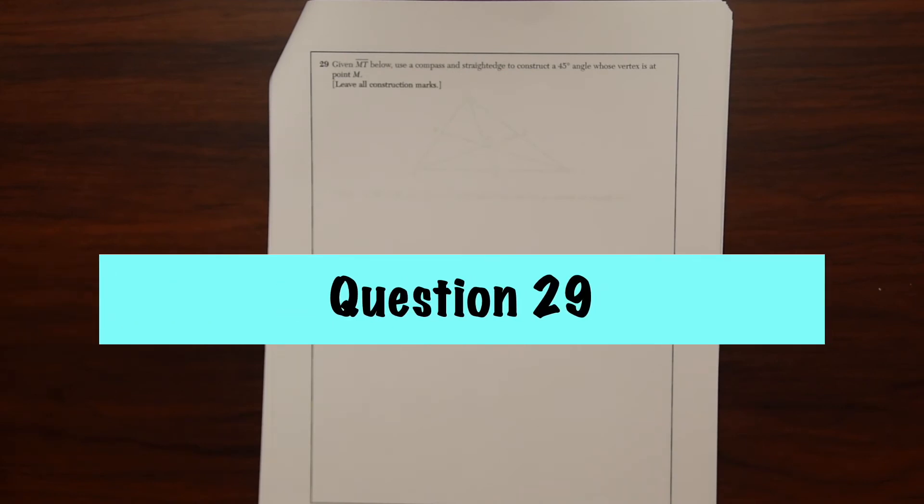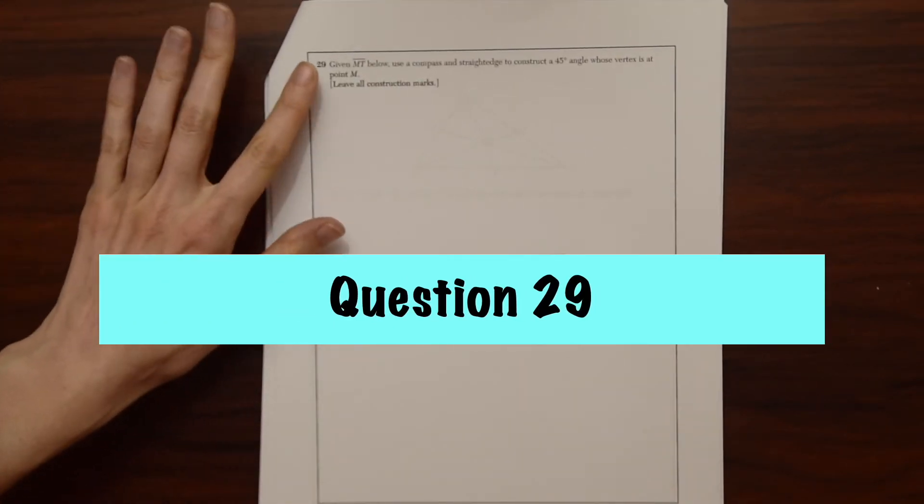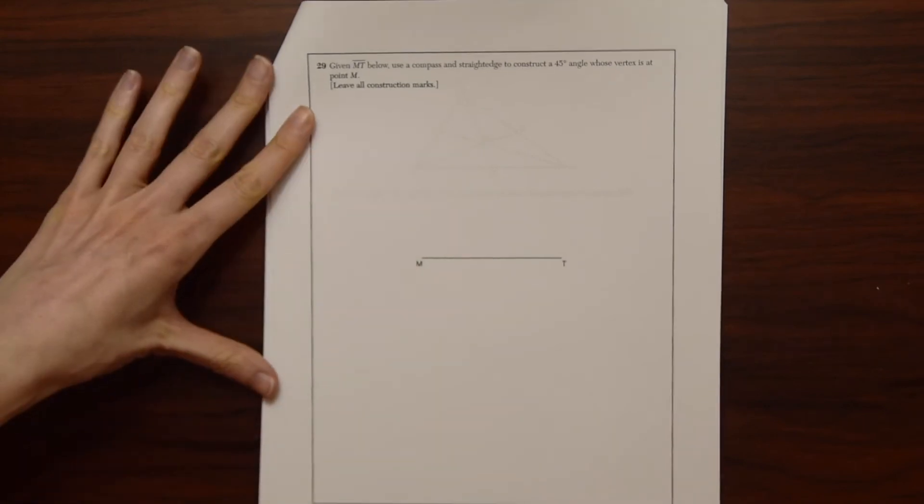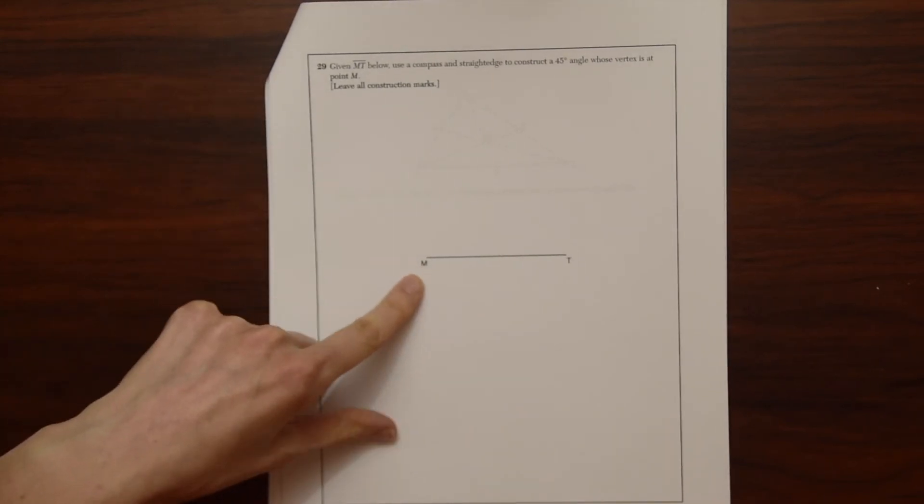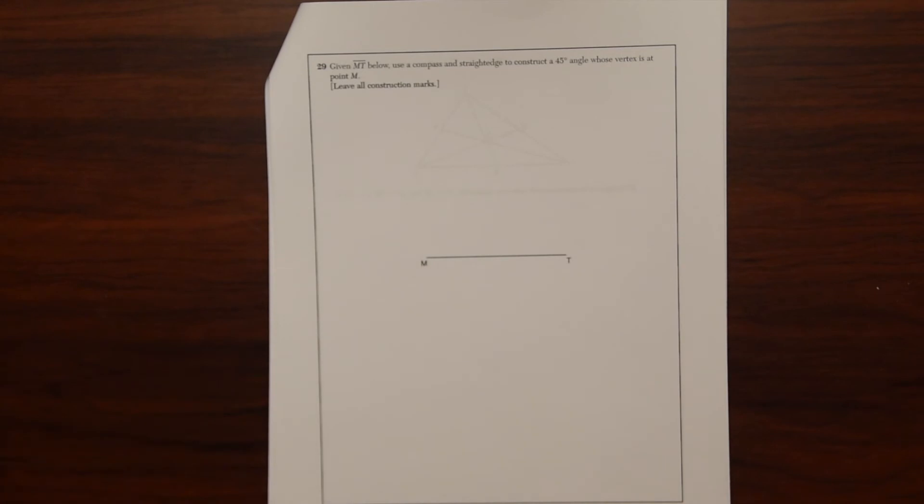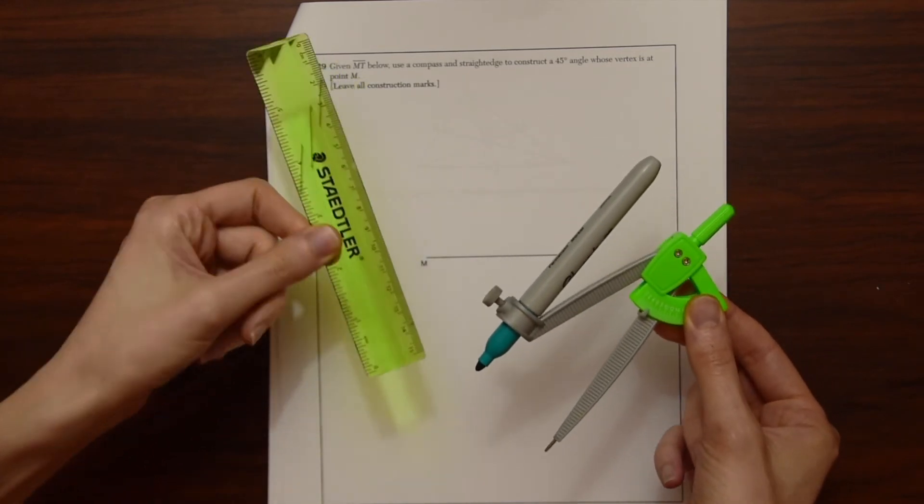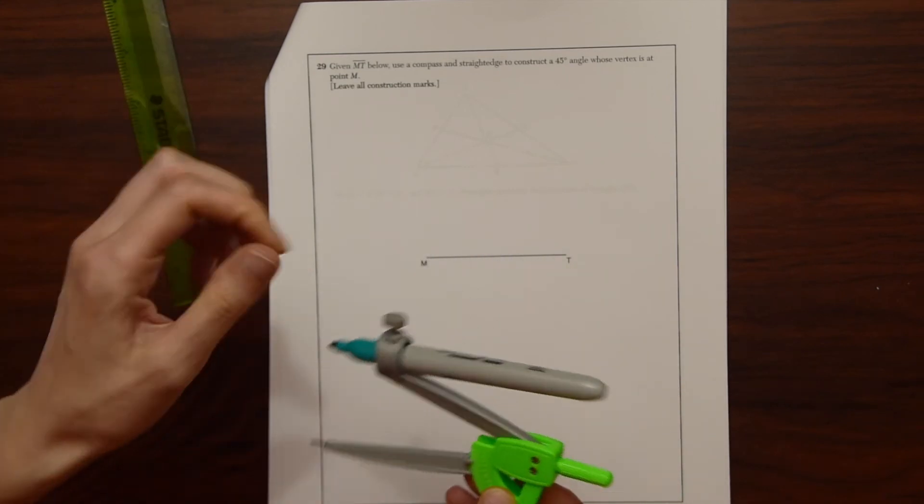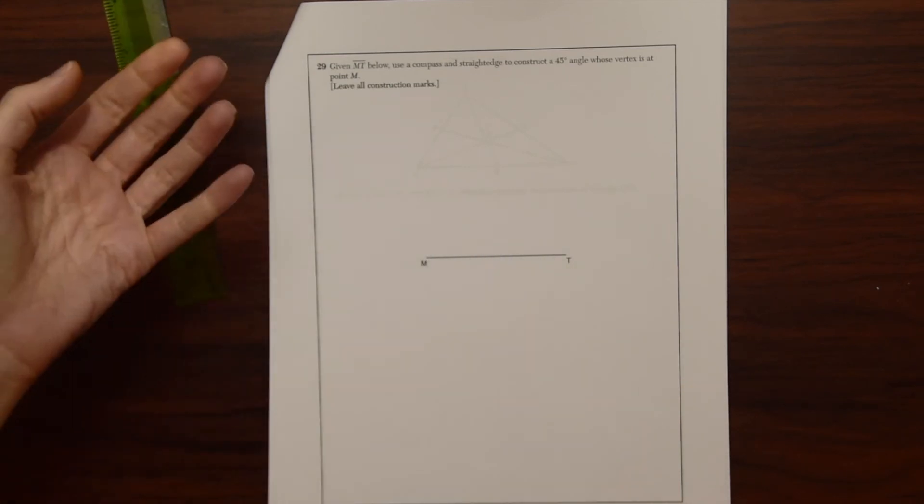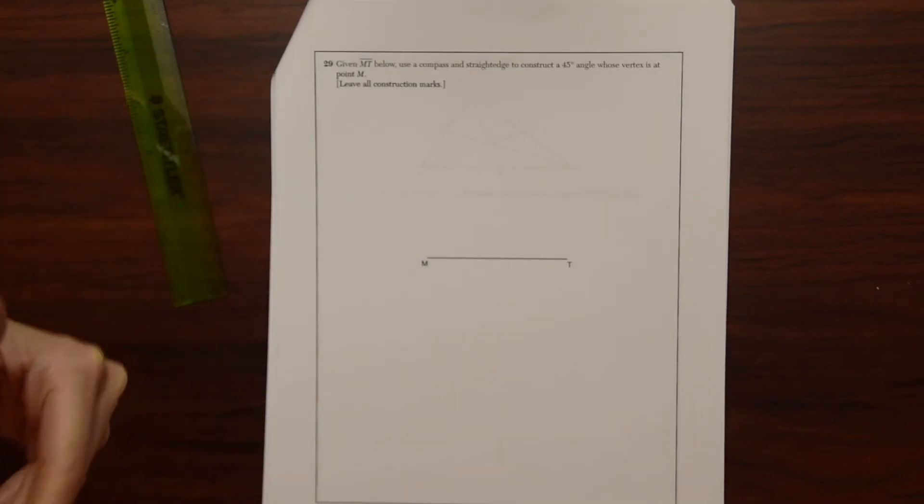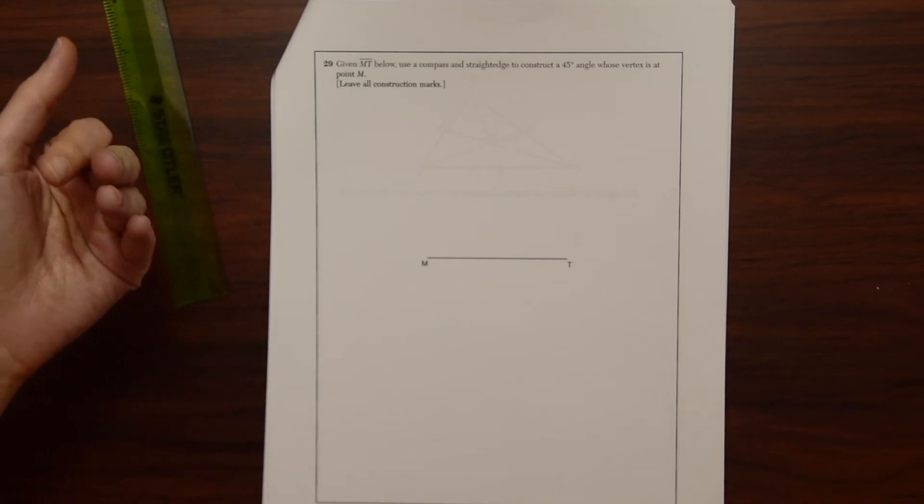On to question 29. Given MT below, use a compass and straight edge to construct a 45 degree angle whose vertex is at point M. Leave all construction marks. So for this, we will need our materials. We have a compass and a straight edge or a ruler. And I'm just going to mark this up a bit. There's different methods for getting the 45 degree angle construction. I'm going to do it this way. I find it easy this way.